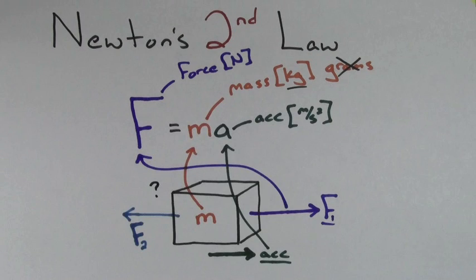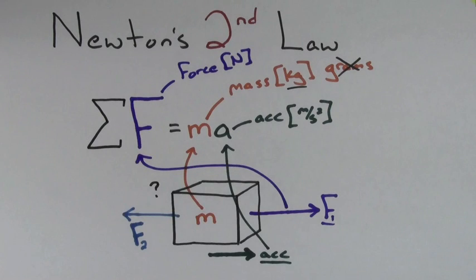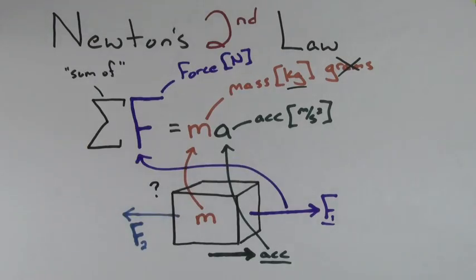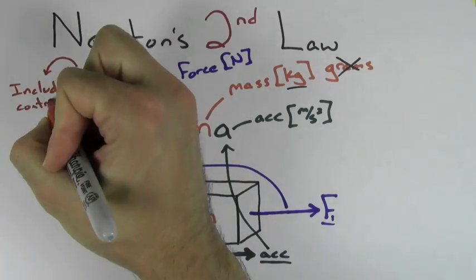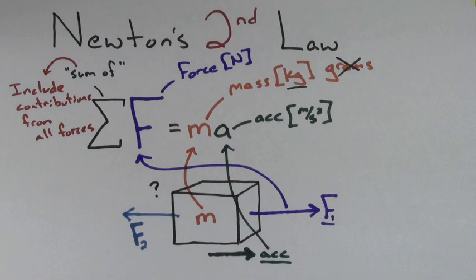Well, then you use the more general form of Newton's second law, which is sigma F equals MA. Sigma, which really just looks like a capital E, stands for the sum of. All that means is you have to include the contributions from all of the forces.